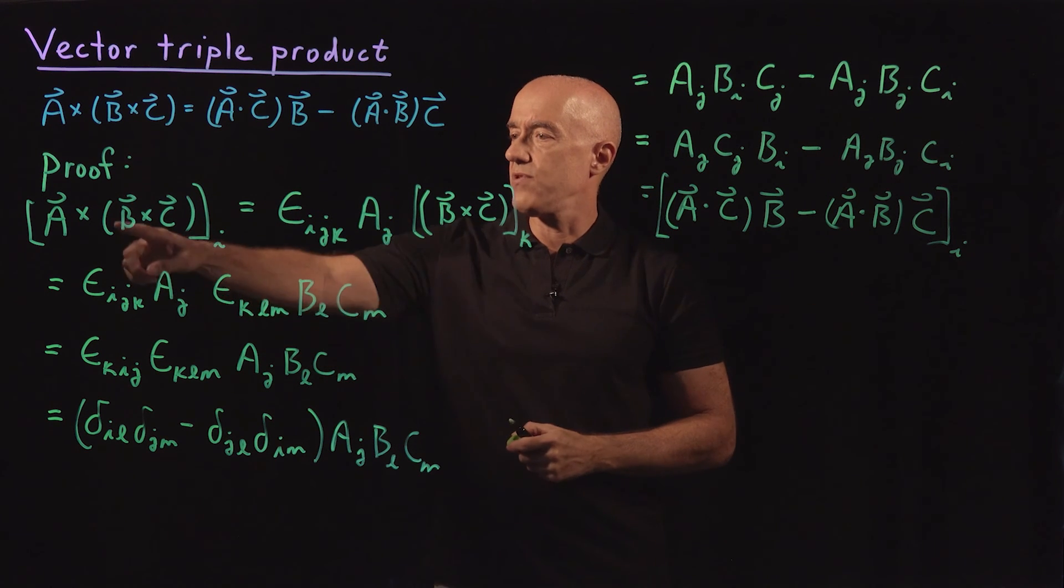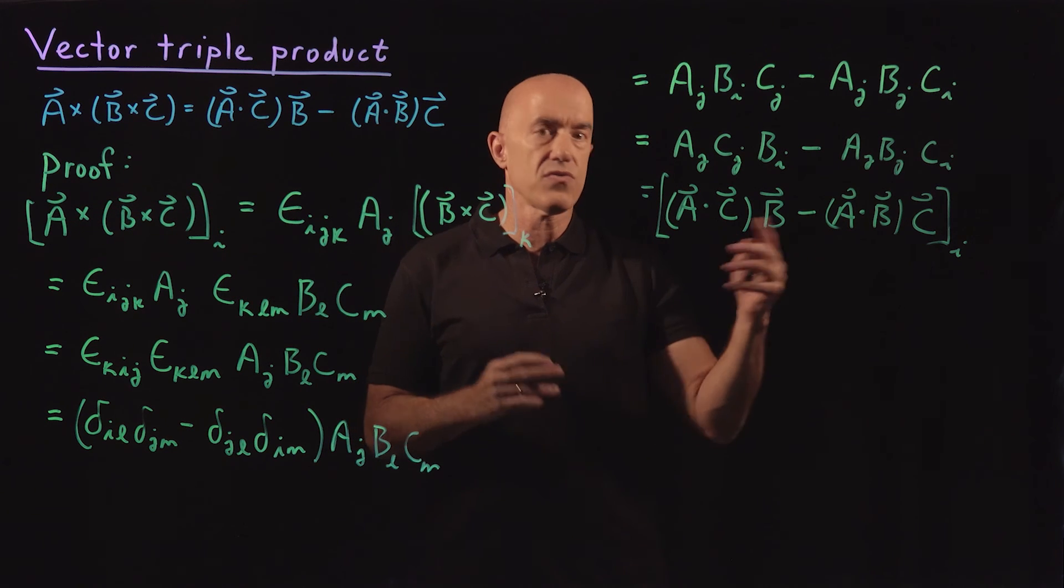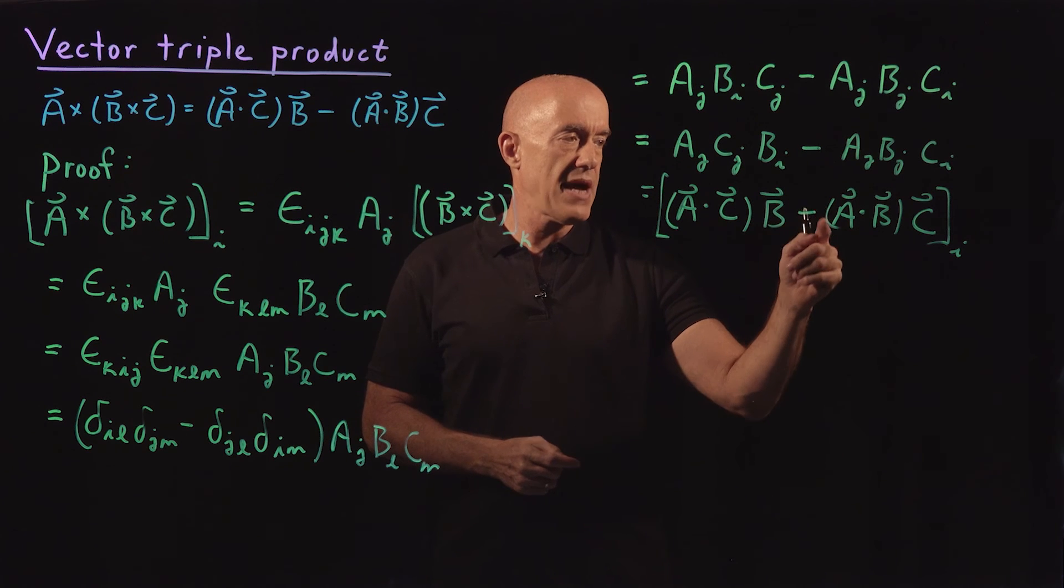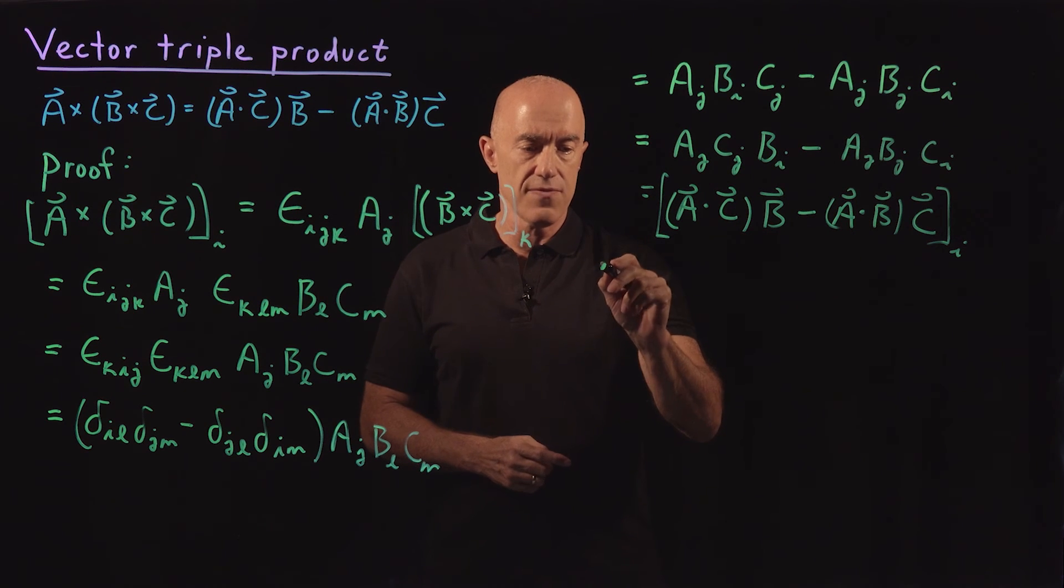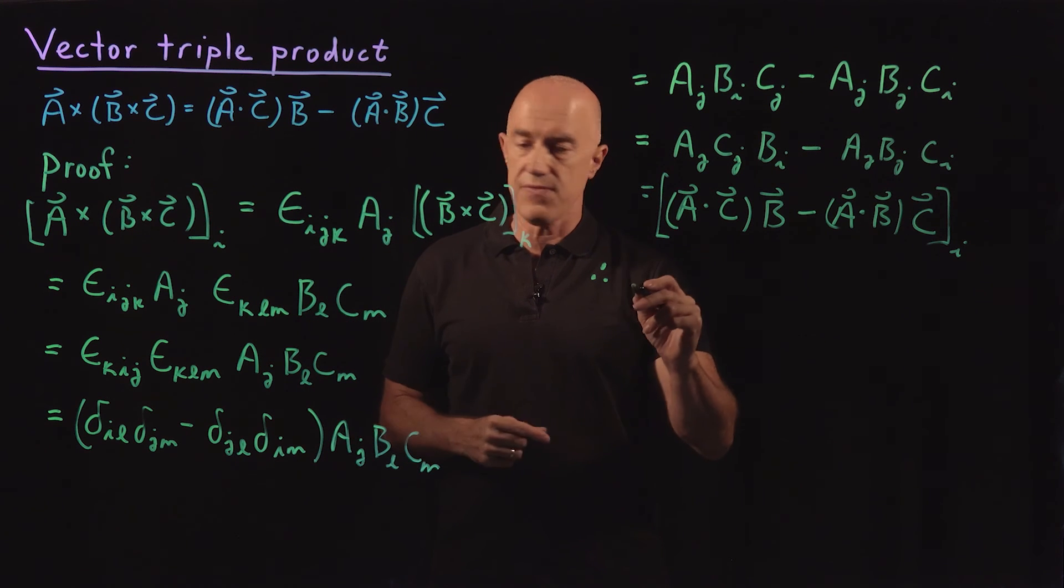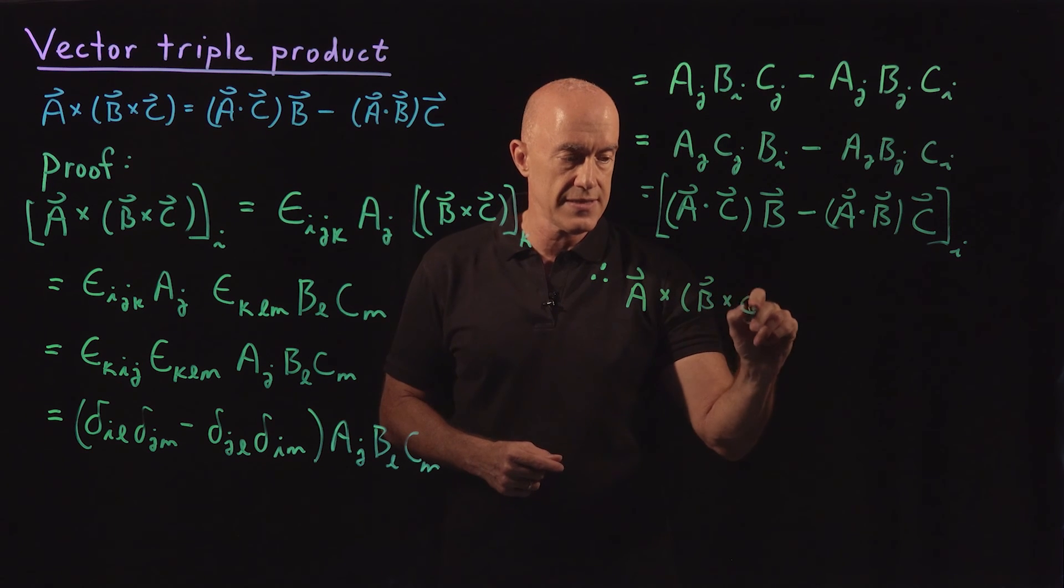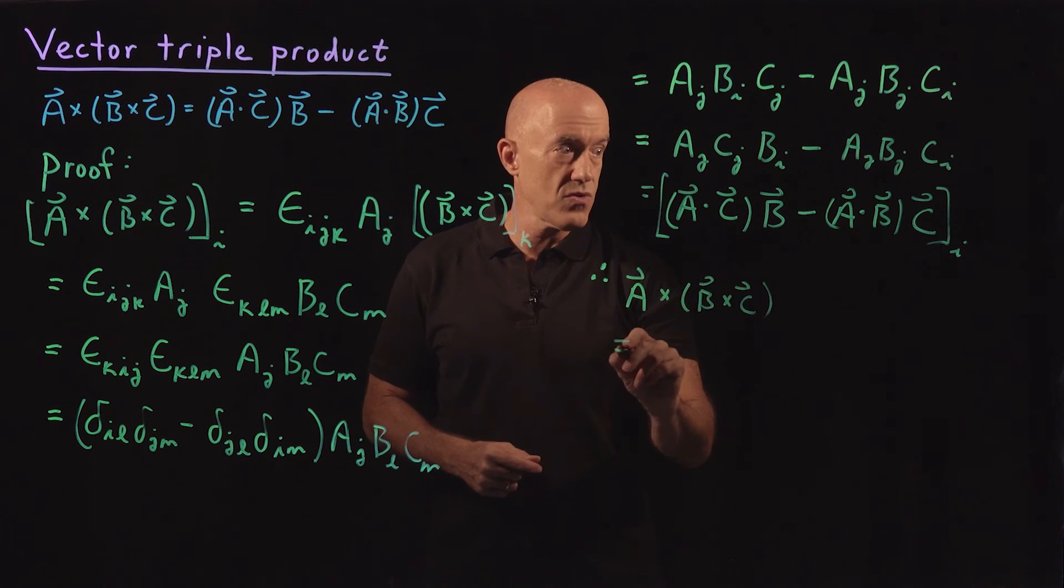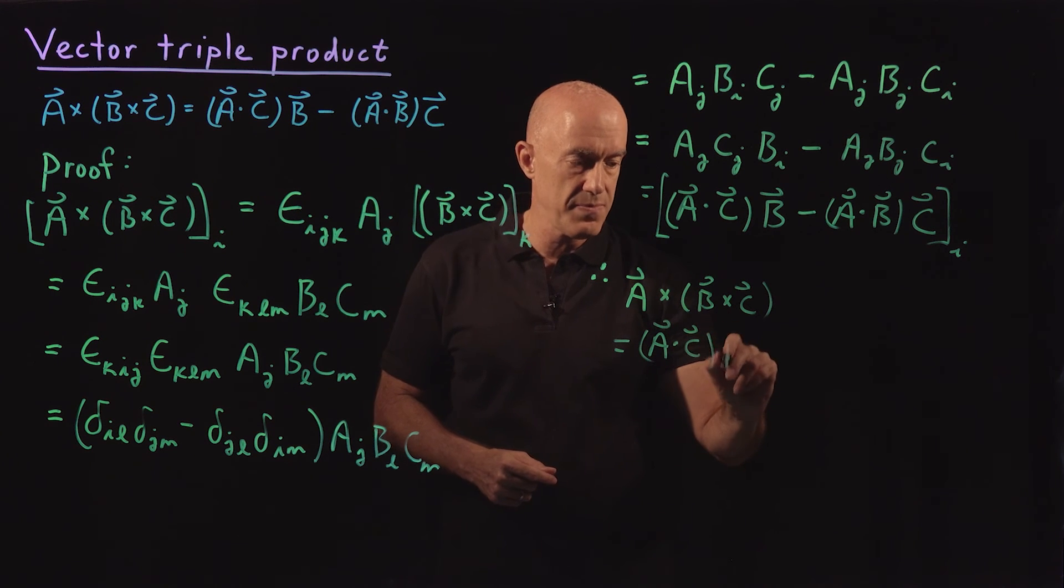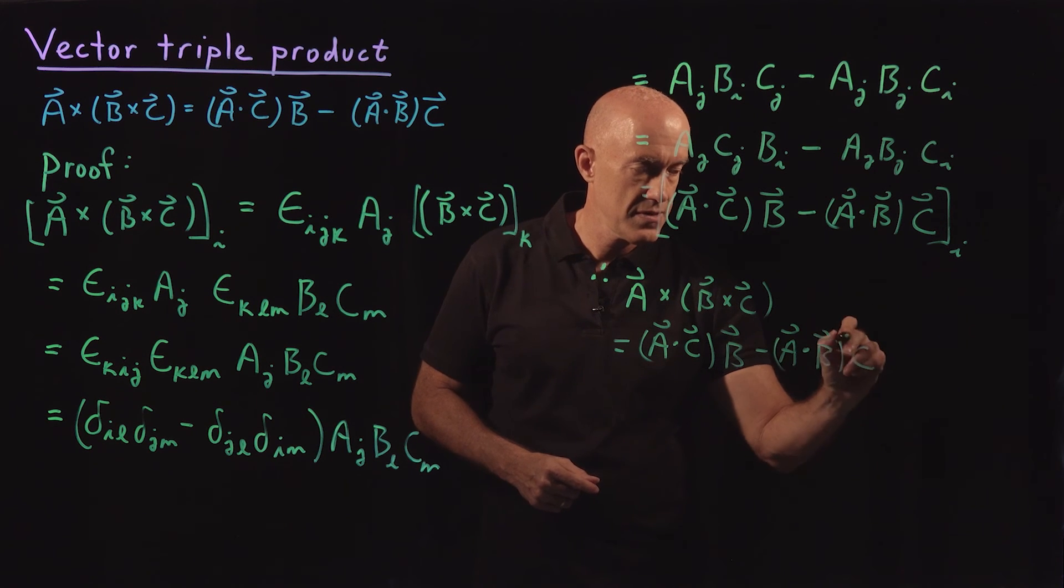So we're basically done. We've proved that the i-th component of A cross B cross C is equal to the i-th component of A dot C times B minus A dot B times C. So if that's true for i equals 1, 2, and 3, then what we've proved is that the vector itself, A cross B cross C, equals A dot C times B minus A dot B times C.